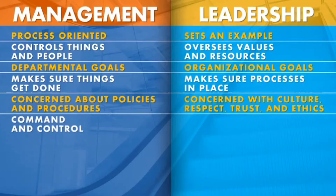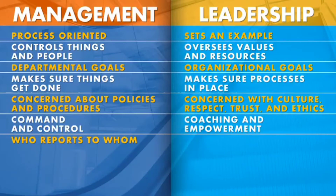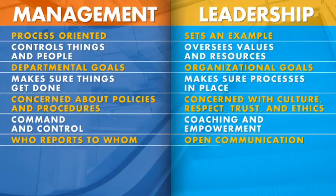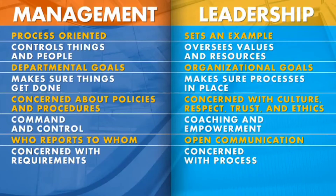Management is into command and control — they think about what they want to make sure happens. Leadership says: I need to involve and coach. The more I can empower others and coach them to perform, the better off we'll be. Management is looking at who reports to whom, who has to communicate with whom, and at what meetings. Leadership is making sure there is open communication across the board. Management is making sure team members are doing what they are required to do. Leadership is looking at the process — what went wrong, why didn't that work the way it should have? Usually when things break down, it's not a people problem, it's a process problem. So leadership is looking to figure out what the processes were.